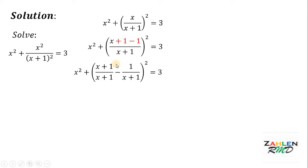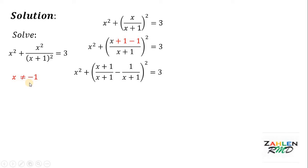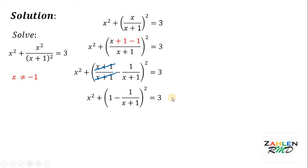Next, we can cancel out x plus 1 on the numerator and x plus 1 on the denominator, provided that we set x is not equal to negative 1. The reason is if x equals negative 1, we have 0 all over 0 and we don't want that. So we need to set x is not equal to negative 1. Therefore, we have x squared plus 1 minus 1 over x plus 1, quantity squared, equals 3.